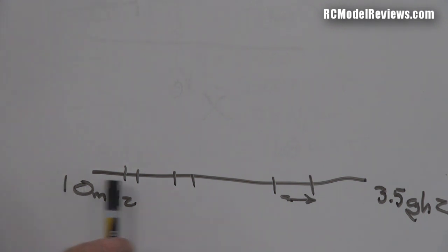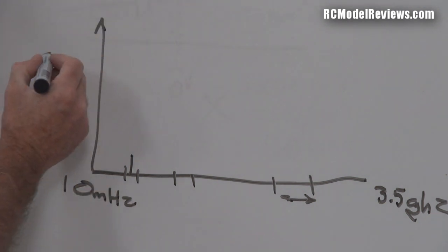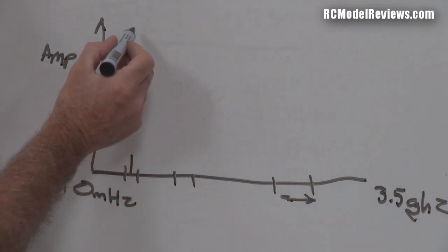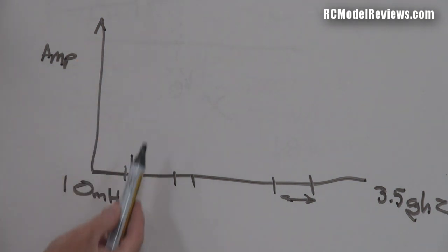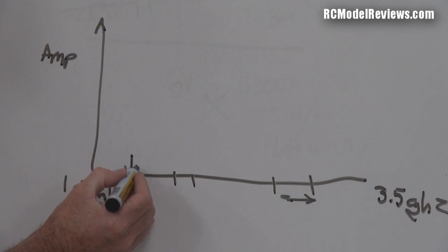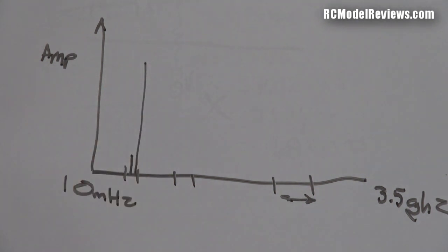What happens when the spectrum analyzer is running and we see a signal? Let's say we have a signal on the 72 megahertz band. This axis here is amplitude—the stronger the signal, the higher the line goes. So we can see two things with a spectrum analyzer: the frequency, which is its position along this line, and the strength of any signal.